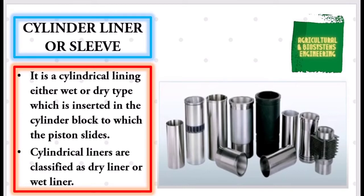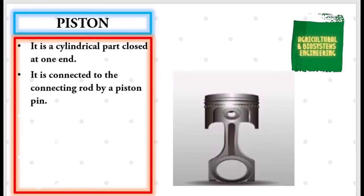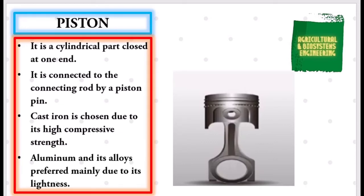Next, our piston. It is a cylindrical part closed at one end. It is connected to the connecting rod by a piston pin. Cast iron is chosen due to its high compressive strength. Aluminum and its alloys are preferred mainly due to its lightness.